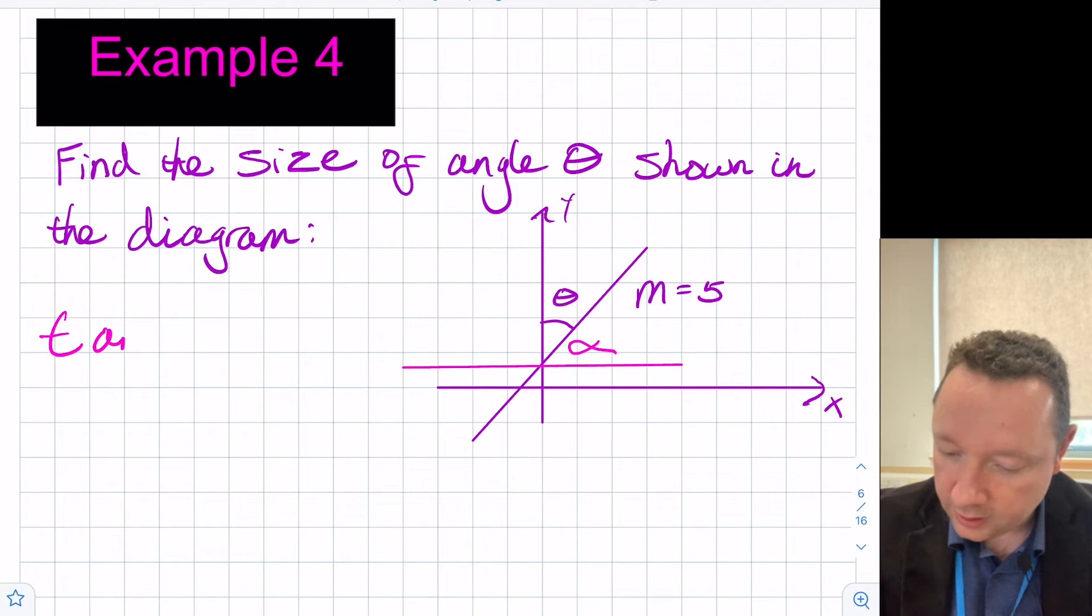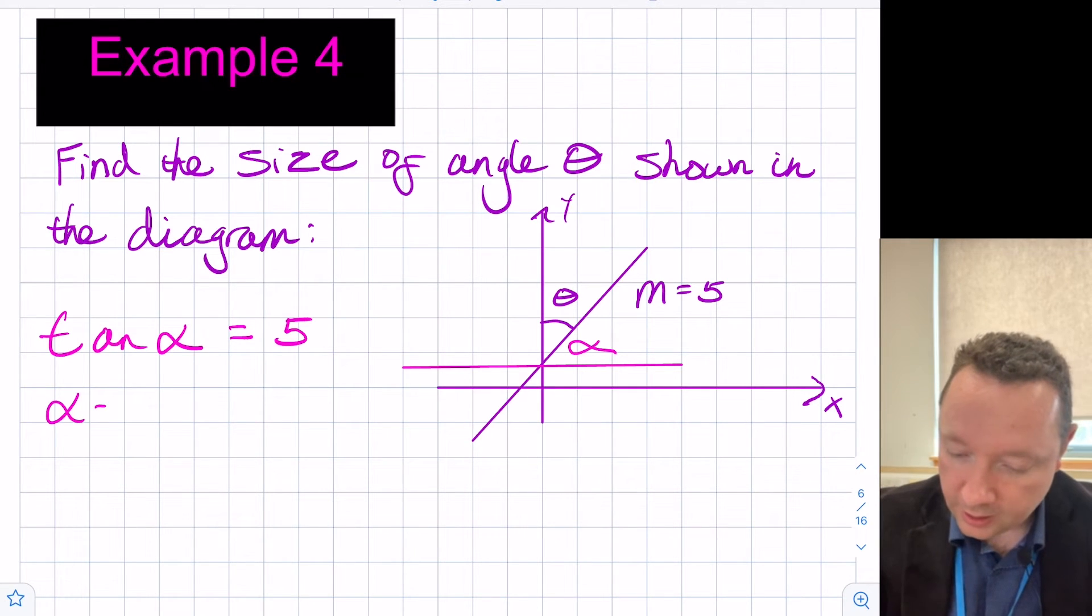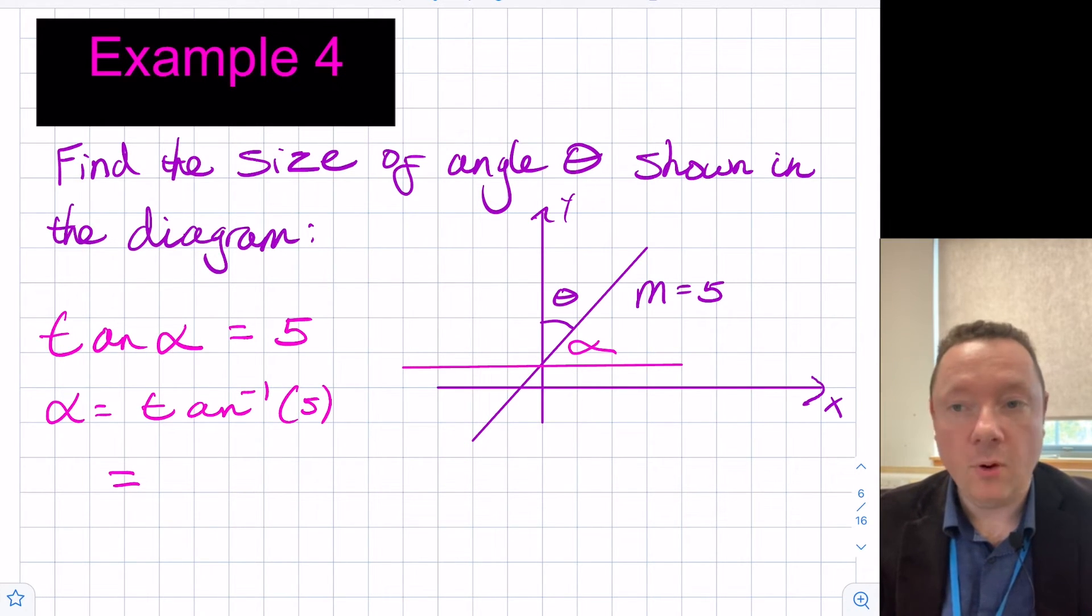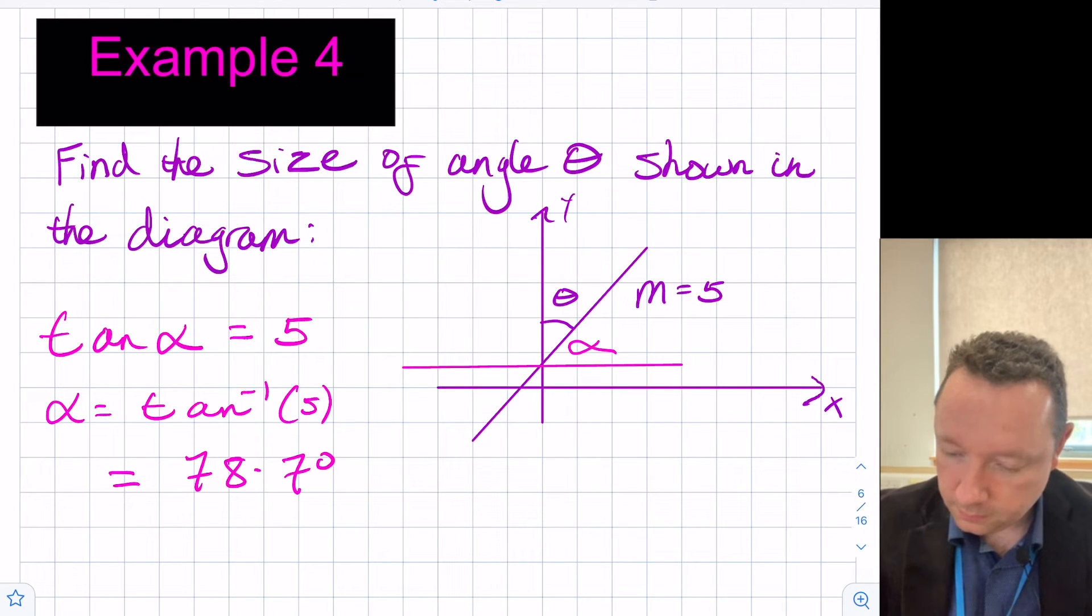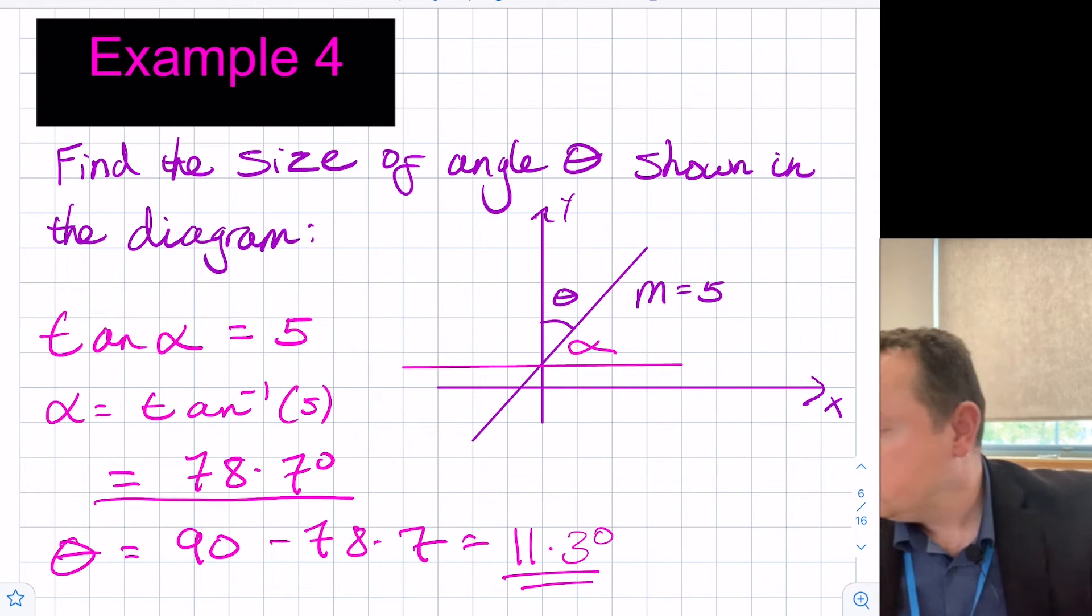And we would know that tan of alpha, in this case, would be equal to the number 5. And then we can work out alpha. That is the inverse tan of 5. And that would equal 78.7 degrees. So since we know that that's 78.7, then theta must be 90 - 78.7, which is 11.3 degrees. So just watch out for what angle they're giving you, what angle they're trying to make you work out.